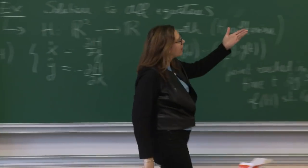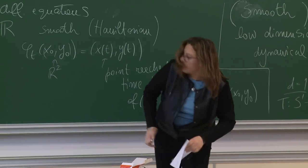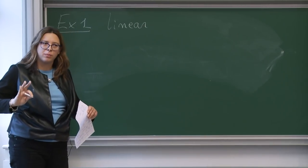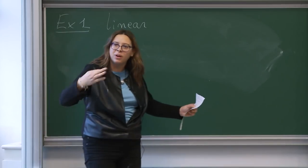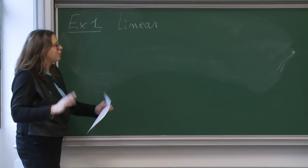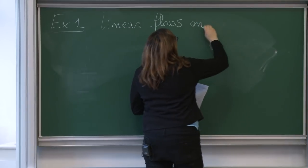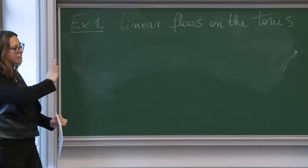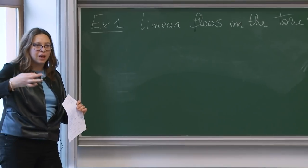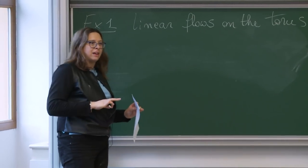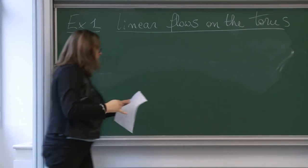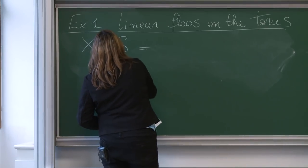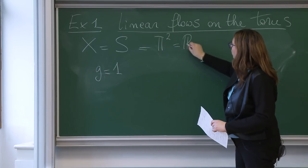Let me give the first example of an area-preserving flow on a surface — the most basic one: linear flows on the torus. The space is T^2 = R^2 / Z^2, which we picture as a unit square with opposite sides identified by translations. We fix an angle theta in S^1 and define the flow by the constant linear differential equation: x-dot = cos(theta), y-dot = sin(theta).